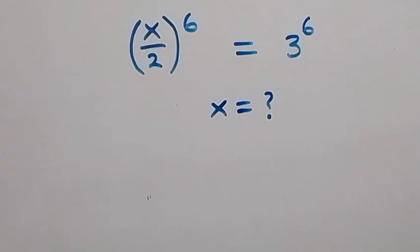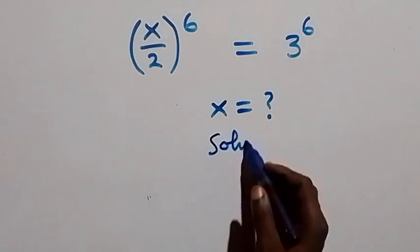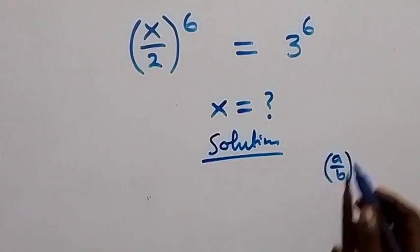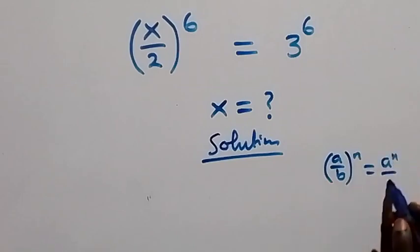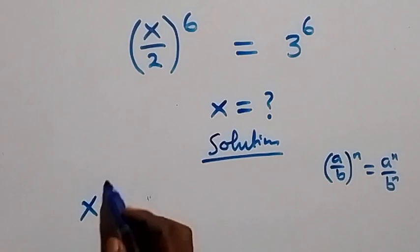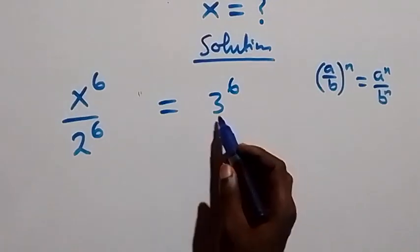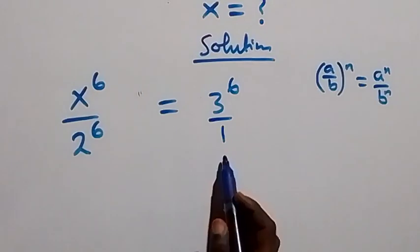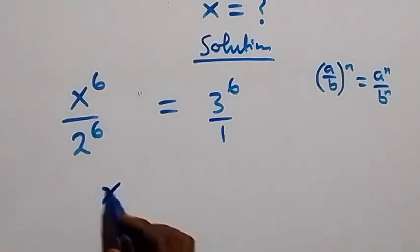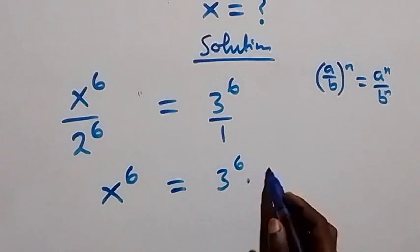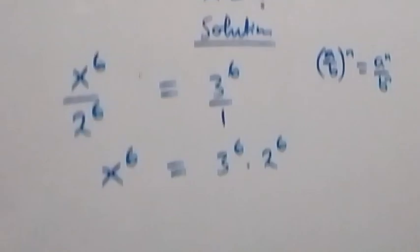Hello, you're welcome. Here is how to solve this exponential equation. We have (a/b) raised to power n, which is a raised to power n over b raised to power n. We can rewrite this as x raised to power 6 over 2 raised to power 6, then equals 3 raised to power 6. Cross-multiplying gives us x raised to power 6 equals 3 raised to power 6 times 2 raised to power 6.